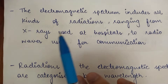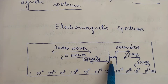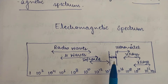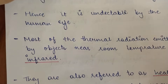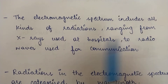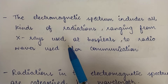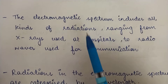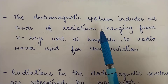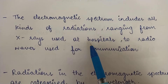The electromagnetic spectrum includes all kinds of radiations within specific ranges, such as radio waves, infrared waves, ultraviolet rays, x-rays, gamma rays, and a portion of visible light. Visible light constitutes only a small portion of the entire electromagnetic spectrum. The spectrum ranges from x-rays, which are used at hospitals — we are all familiar with x-rays — to radio waves used for communication.